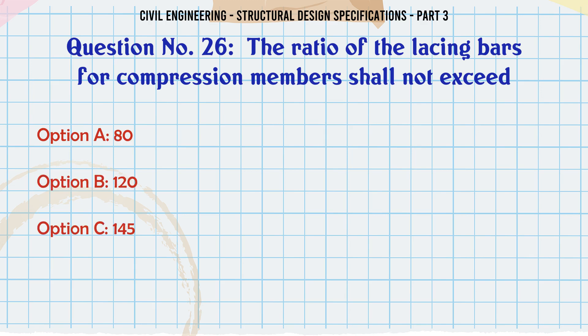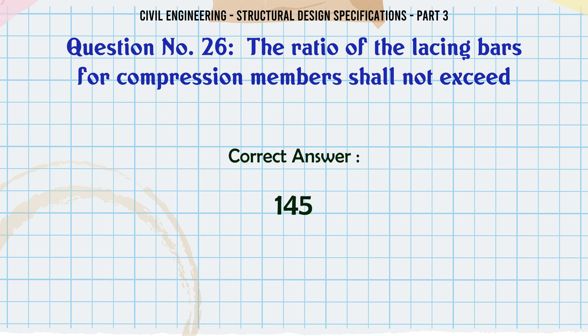The slenderness ratio of lacing bars for compression members shall not exceed: a. 80, b. 120, c. 145, d. 200. The correct answer is: 145.